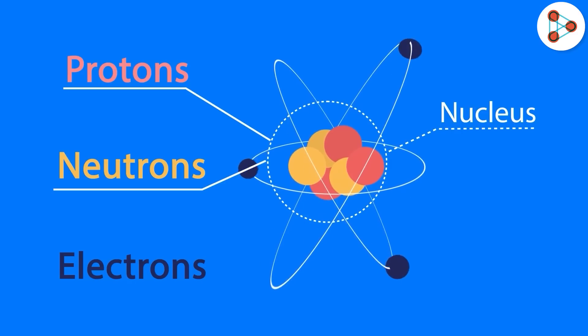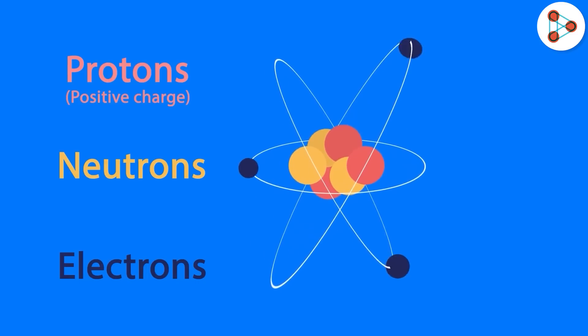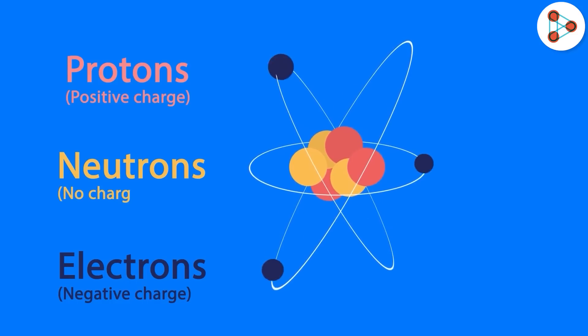Do you know the charge carried by these three? Protons are positively charged, electrons are negatively charged, and the neutrons, as the name suggests, are neutral and have no charge.